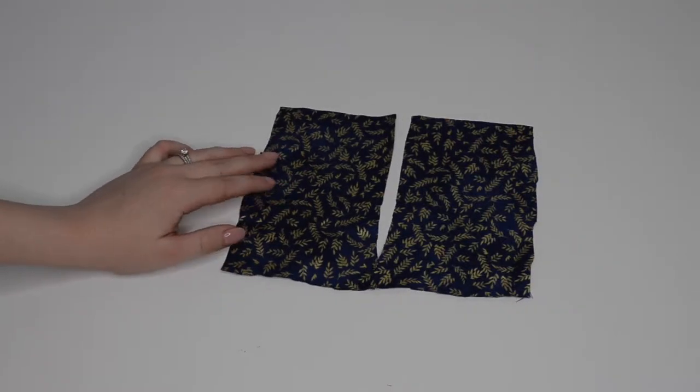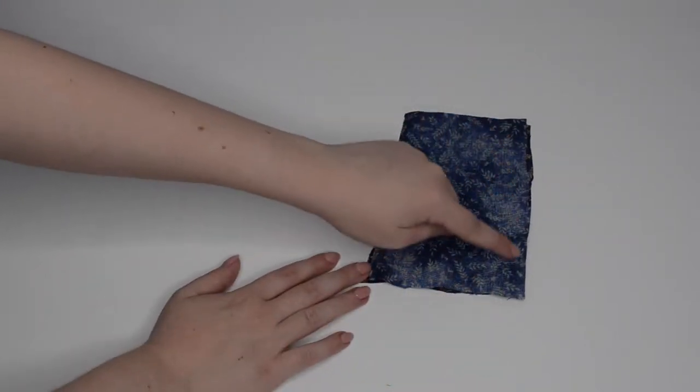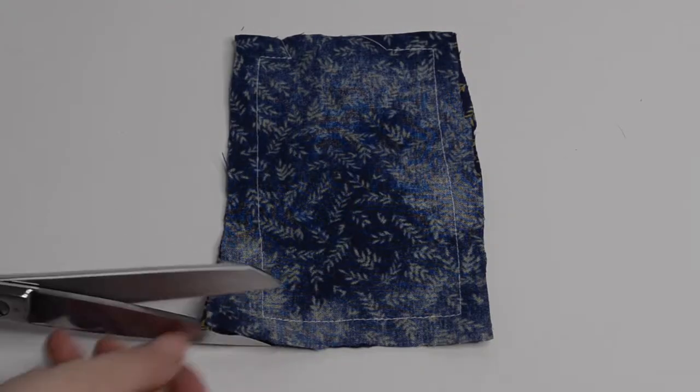As you can see we have two of the same pieces and with them facing right sides together I'm going to sew them on my machine just like this. Here we have it all stitched up.